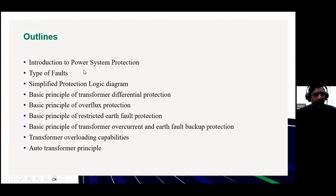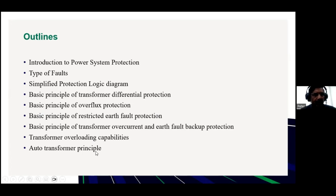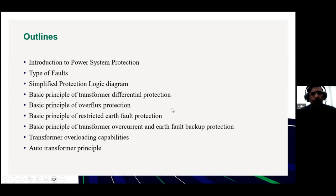The outline will cover the types of faults, some simplified protection logic diagrams, basic principles of transformer differential protection, transformer overflux protection, restricted earth fault protection, transformer overcurrent backup protection, transformer overloading capabilities, and a little bit on auto transformer principal. Within this, the differential protection, restricted earth fault protection, and the overflux protection are basically unit protections — they only protect the protection zone and there is no need to worry about discrimination. Overflux protection is to prevent over-fluxing of the transformer. Overcurrent and earth fault protections are backup protection, and that's where discrimination comes in.